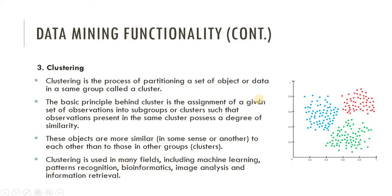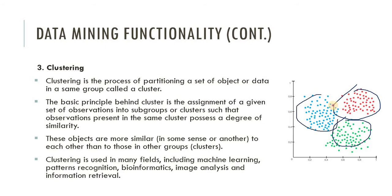Clustering is the process where we partition a group of data into different clusters — cluster means group. Based on the image we can see that there are three clusters: a blue group, a red group, and a green group. The clustering concept says that data in one group is more similar than the data in other groups. In the green group all data are related to each other; in the red group the color of each member is red; and in the blue group the color of each member is blue — they don't mix.